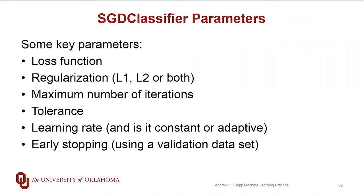One can also turn on early stopping using an independent validation data set. The idea is that once performance stops improving for that independent data set and in fact starts to turn back upwards — get worse — then that's the correct time to actually stop the learning process.